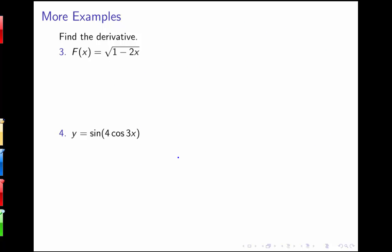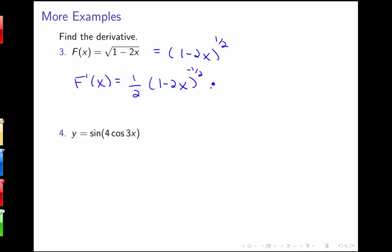Here are a couple more examples. We want to find the derivative when f of x equals the square root of 1 minus 2x, which is 1 minus 2x to the one-half power. The outside function is something to the one-half, so I get one-half times that something to the negative one-half, evaluated at the inside function 1 minus 2x, times the derivative of the inside, which is negative 2. This simplifies to negative 1 over the square root of 1 minus 2x.